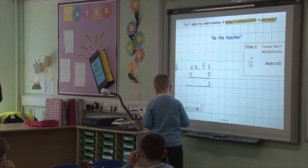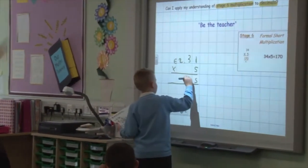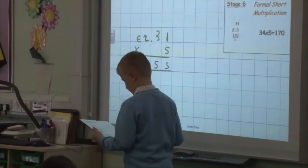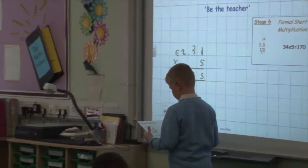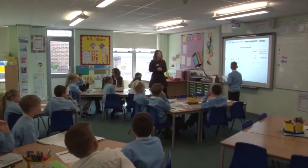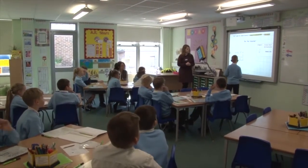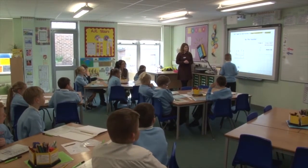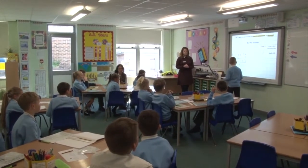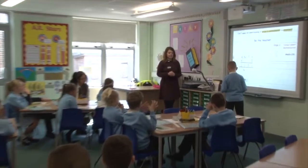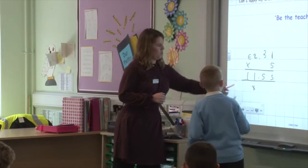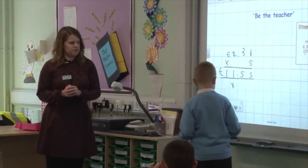Then I did five times three, which is fifteen. Step to the side for me. What's he done there, Vicky? He's carried the one. Five times two, which is ten, and I added one. Lovely. Do you want to add one more thing before we say it's done? What unit? There we go — and we need our pound sign. Perfect.